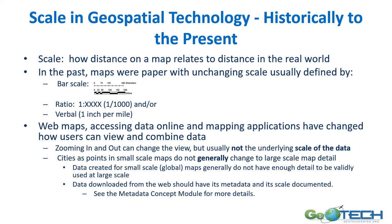A verbal scale is commonly used — it says something like one inch per mile or one centimeter per kilometer. With web maps and accessing data online in various mapping applications, things have changed in how users view and combine data. Zooming in and out can change the view, but usually not the underlying data scale. Cities shown at small scale do not generally change to very detailed maps as you zoom in. Data created for a small scale or global map generally does not have enough detail to be validly used at a larger scale. Data downloaded from the web should have its metadata and scale documented, and you should review it before use.